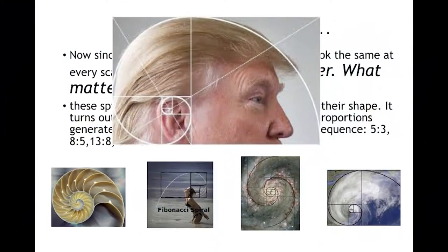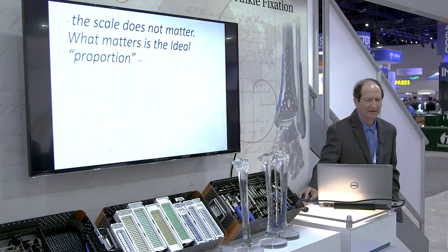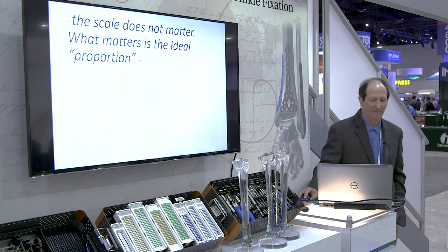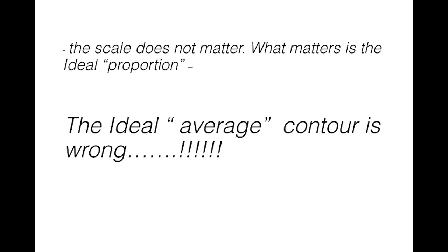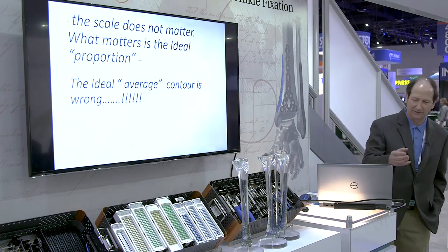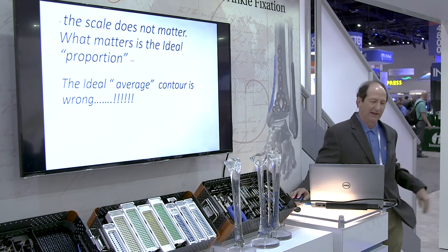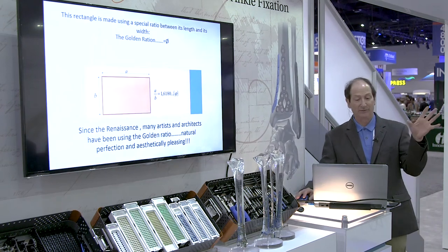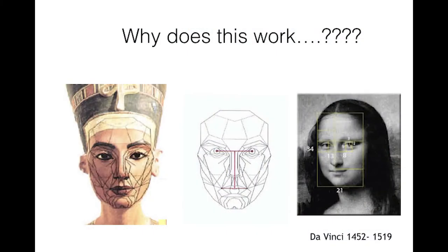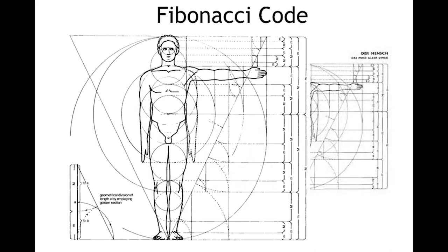The scale doesn't matter — what matters is the ideal proportion. The ideal average contour I'm going to tell you right now is wrong. Just averaging bone data is not obeying the laws of nature. Early Renaissance artists discovered this — many artists and architects used the golden ratio because it's naturally aesthetically pleasing and represents human perfection. If you analyze the Mona Lisa and Aphrodite, it's all the Fibonacci ratio.